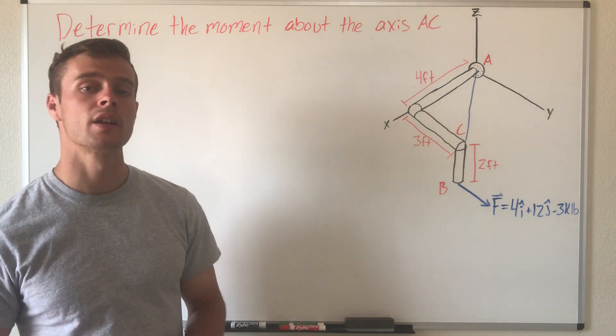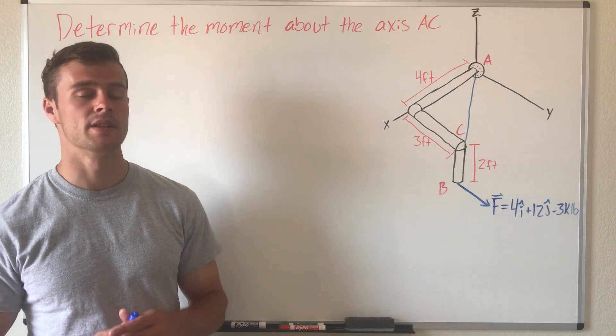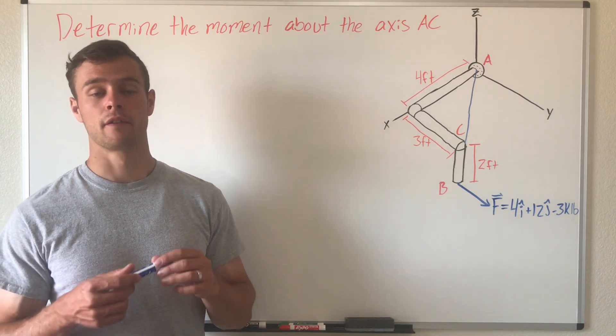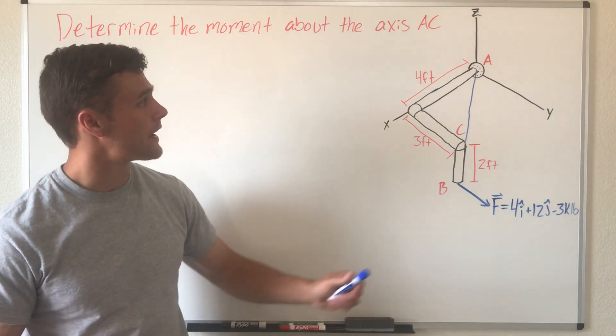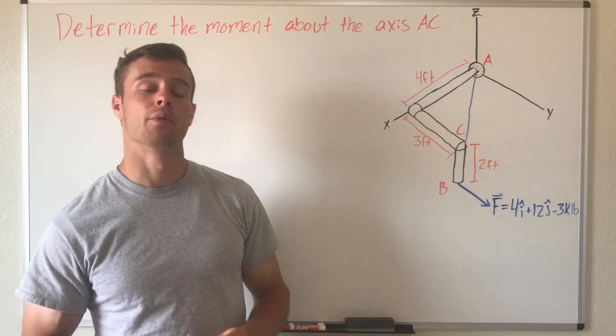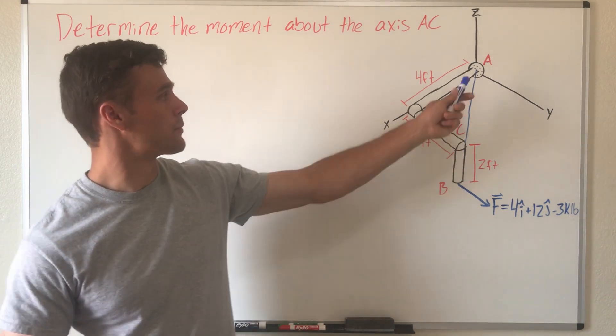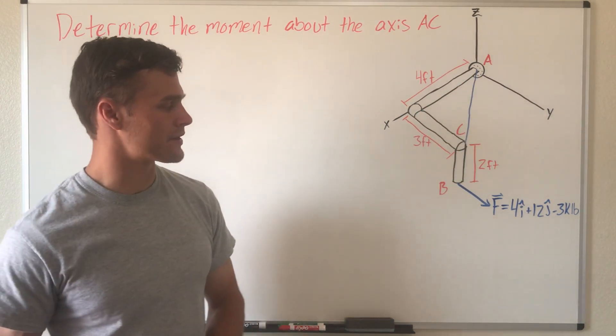The way we're going to do that is we're going to use vector analysis because that's the easiest way. First, we need to find a unit vector representing this line going from point A to point C, and we need to find a vector representing our moment arm going from point A to point B where our force is.